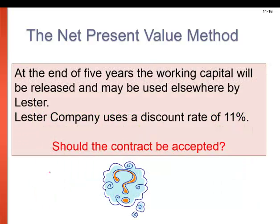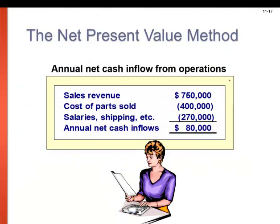At the end of five years, the working capital will be released and may be used elsewhere by Lester. Lester is going to use a discount rate of 11%. So we're going to get that working capital back when we're done. First, let's get our annual net cash inflows from the normal operations of the business thanks to the new equipment. We have sales revenue coming in, less the cost of the parts sold, less salaries and shipping. Revenues minus expenses equals our annual net cash inflow of $80,000 every year.